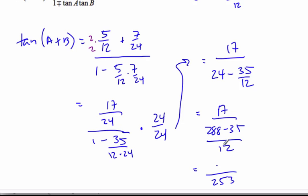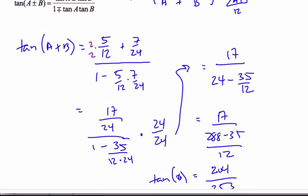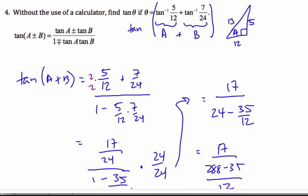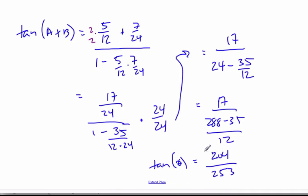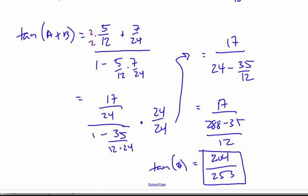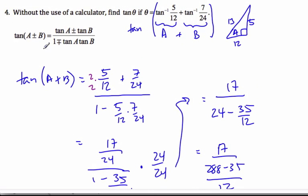And then, flipping it, I get 17 times 12, which is 204. And so the tangent of my theta, which is A plus B, is 204 over 253. This is my value here, using the compound angle, the addition of my angle A and B, and recognize that this is an angle, as is this.